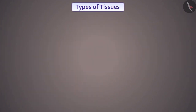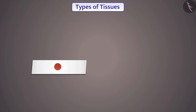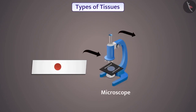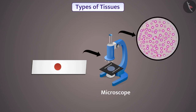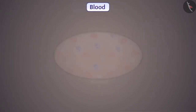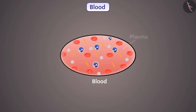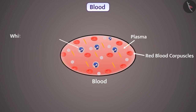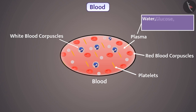If we pour a drop of blood on the slide and observe it with the help of a microscope, then we will see cells of different types — that's why blood is a type of complex tissue. The fluid matrix of blood is called plasma. In plasma, red blood corpuscles, white blood corpuscles and platelets are suspended. Plasma also contains water, glucose, proteins, salts, enzymes and hormones.